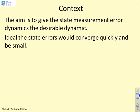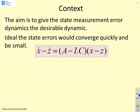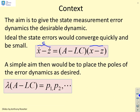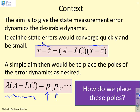The aim is to give the state measurement error dynamics a desirable dynamic. Ideally, the state errors would converge quickly and be small. We want these errors to converge to zero very quickly if possible. A simple aim then would be to place the poles of the error dynamics as desired. In other words, we want the eigenvalues of A minus LC to be where we want them to be, P1, P2, and so on. The key question is, how do we place these poles? How do we choose L to get the poles that we want?